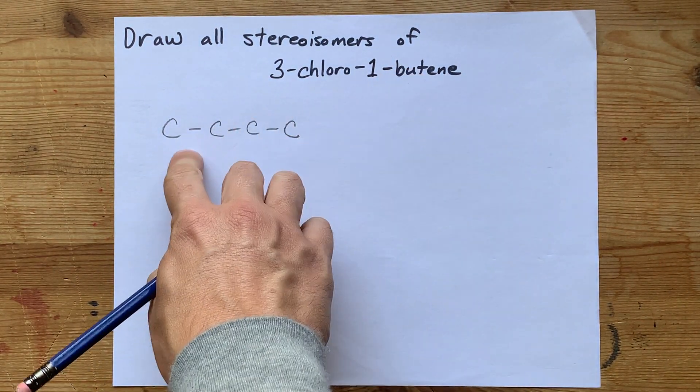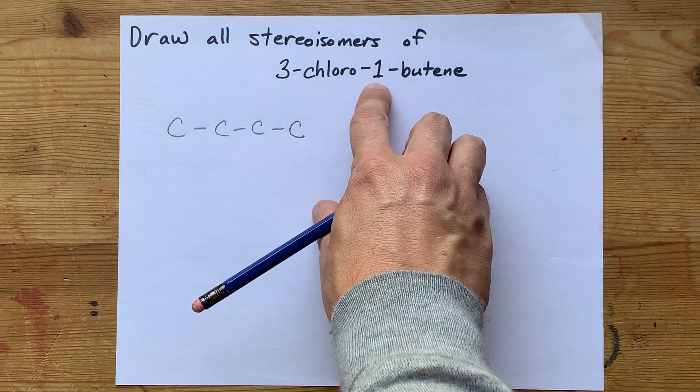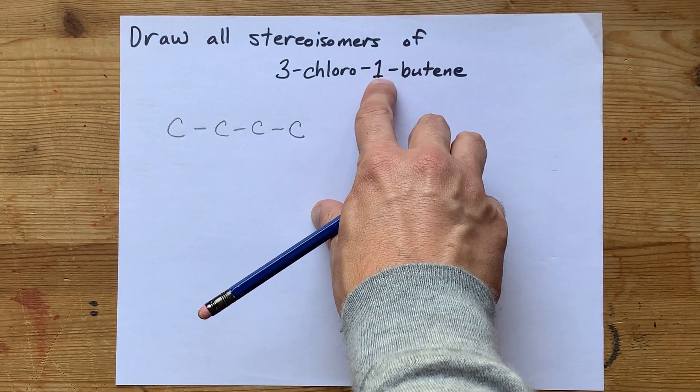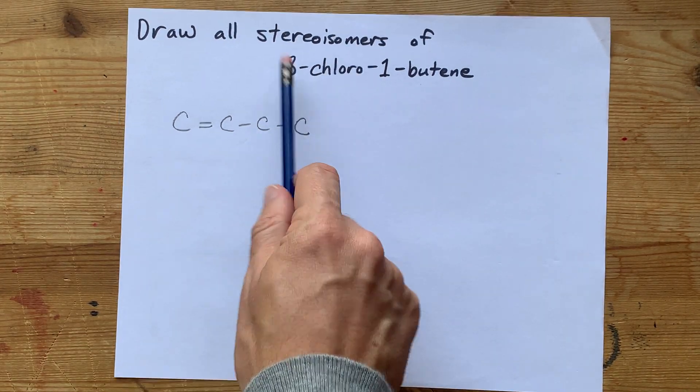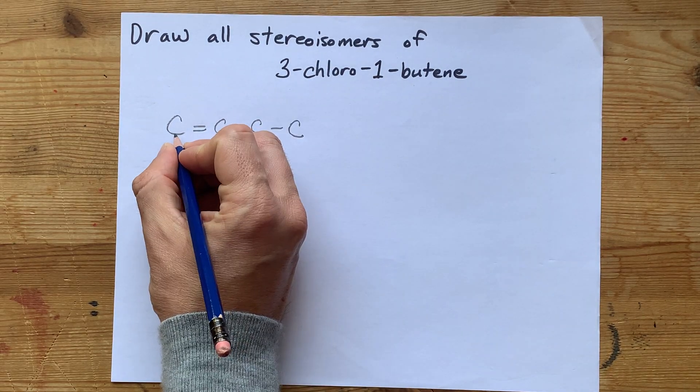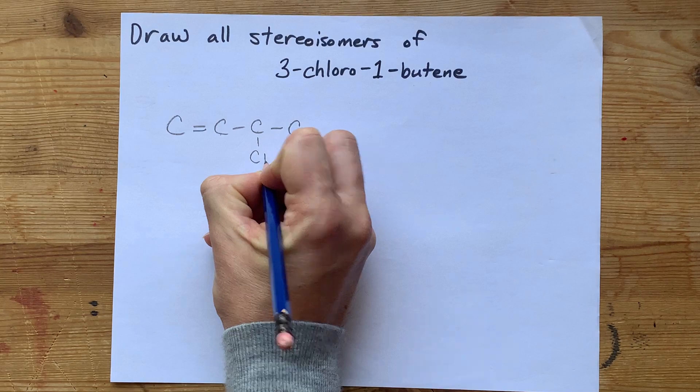Butene - the 'but' is four carbons all connected to each other. There's a double bond starting at carbon 1. That's what the 1-butene means. And then the 3-chloro means that on carbon number 3, I have a chlorine atom.